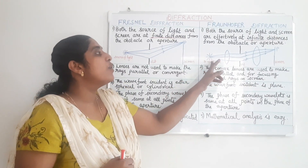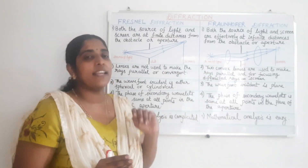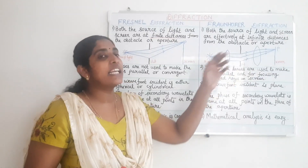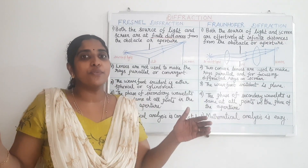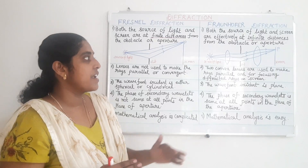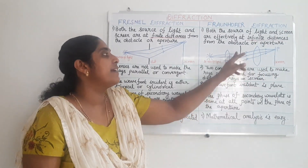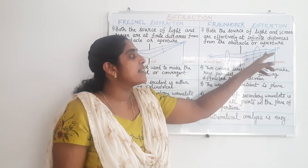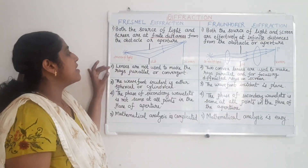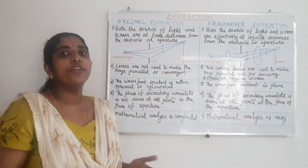But in Fraunhofer diffraction, both these distances are infinite. In Fresnel diffraction, lenses are not used, but in Fraunhofer diffraction two convex lenses are used. Since the source of light and the screen are at an infinite distance, it is not practically possible to place them at infinity. So we use two convex lenses: one in front of the slit to make the light travel parallel before entering the slit, and one between the slit and the screen to focus the diffracted light beams onto the screen. In Fresnel diffraction, lenses are not used to make the rays parallel or convergent because the source of light and screen are at a finite distance.